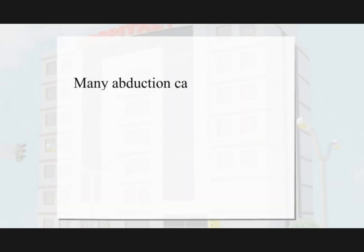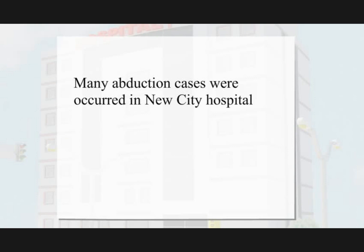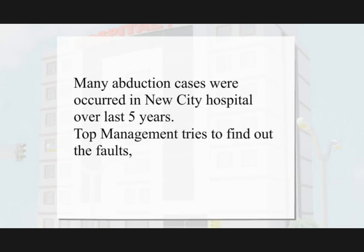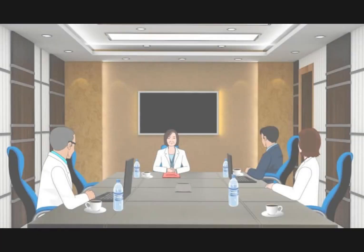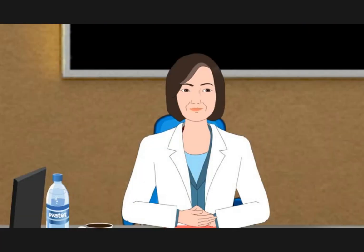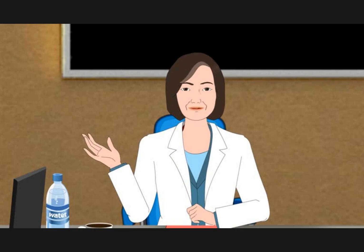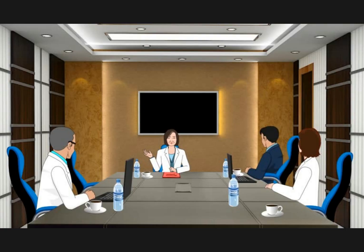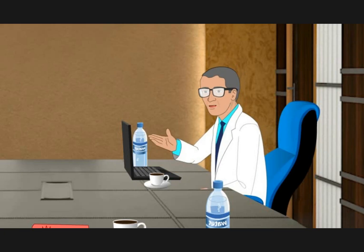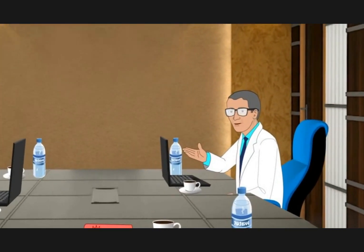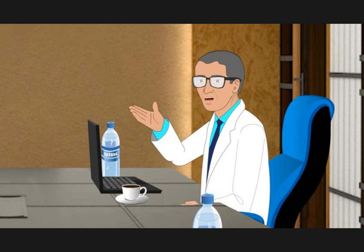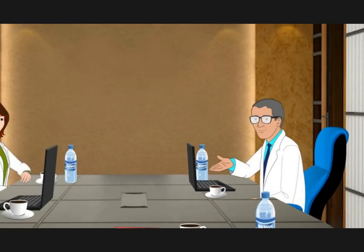Many abduction cases occurred in New City Hospital over the last 5 years. Top management tried to find out the faults, causes and effects in the existing process of the hospital. Almost 145 cases of abduction have been identified. This hospital has on average 300 births every month, making it high time to identify the faults and take essential steps to stop abduction cases.